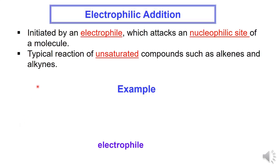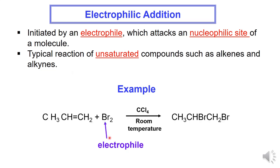Electrophilic addition is initiated by an electrophile which acts at a nucleophilic site of a molecule, and is a typical reaction of unsaturated compounds — compounds consisting of multiple bonds such as alkenes and alkynes. Example: Bromine molecule adds as an electrophile, acting at the nucleophilic site of an alkene molecule consisting of a carbon-carbon double bond, and the product is formed with 2 bromine atoms added across the carbon-carbon double bond.